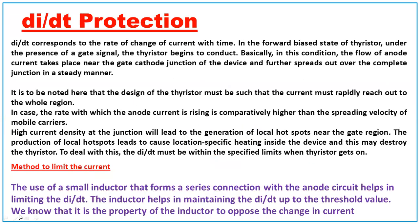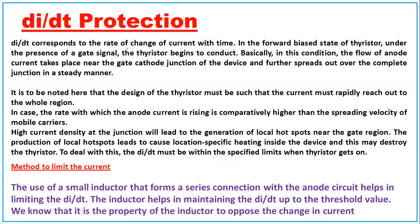Now talking about di/dt protection — the rate of change of anode current. In the forward biased state of the thyristor, under the presence of a gate signal, the thyristor begins to conduct. Initially, the flow of anode current takes place near the gate-cathode junction and further spreads out over the complete junction in a gradual manner. The current must rapidly reach out to the whole region.